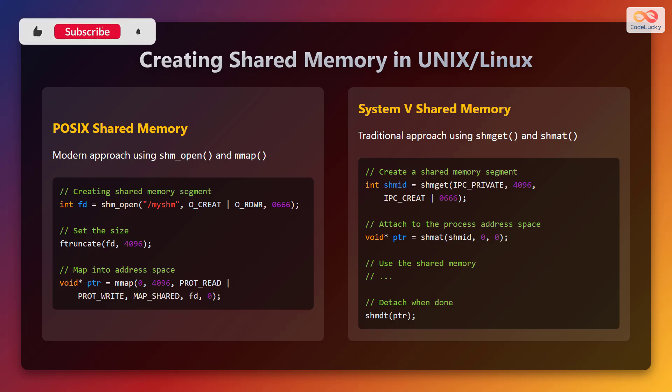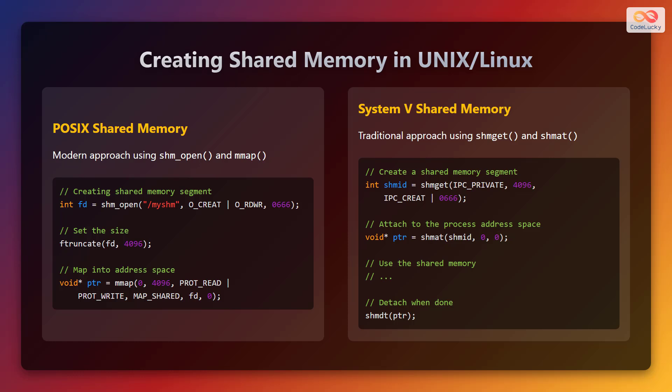The second approach is System V shared memory, which is a traditional approach using the shmget and shmat functions. The code snippet is given here. First, create a shared memory segment using the shmget function. Then, attach to the process address space using the shmat function, and detach when done using the shmdt function.